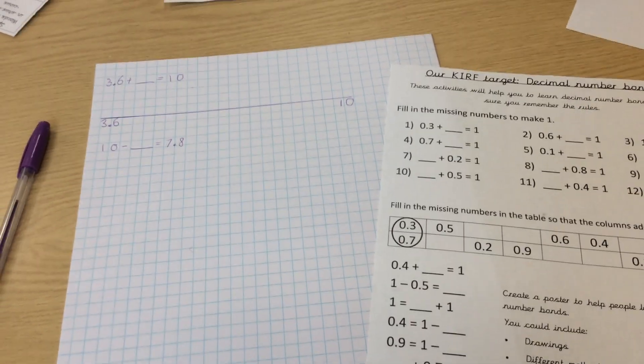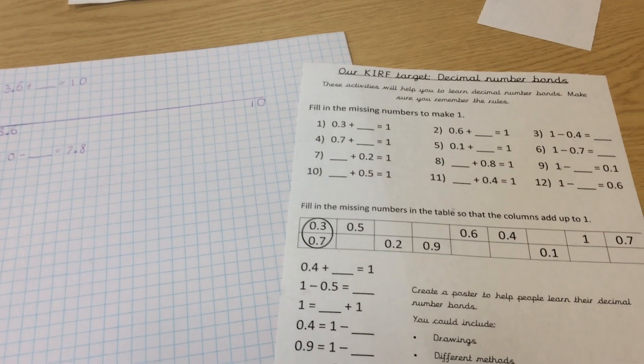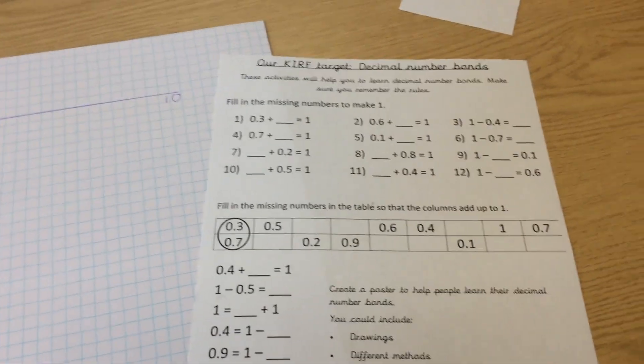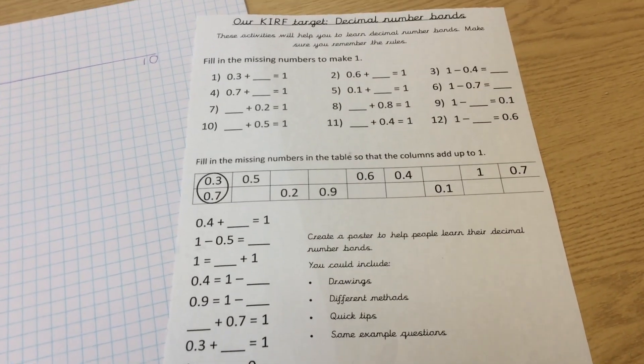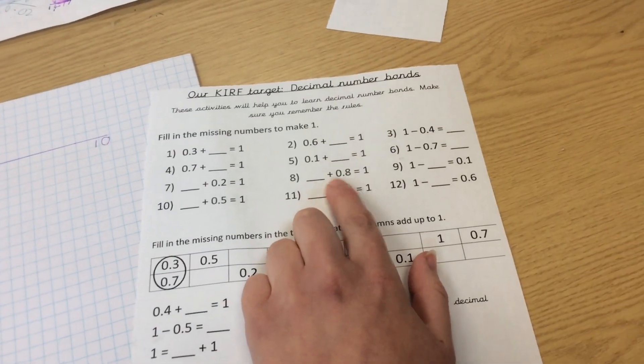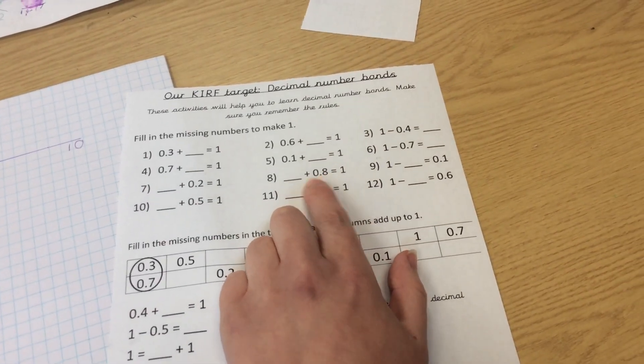Hello! Our KIRF target for this half term is decimal number bonds to 1 and 10. This is your homework sheet from last week which was working on decimal number bonds to 1, using your number bonds to 10 to help you.